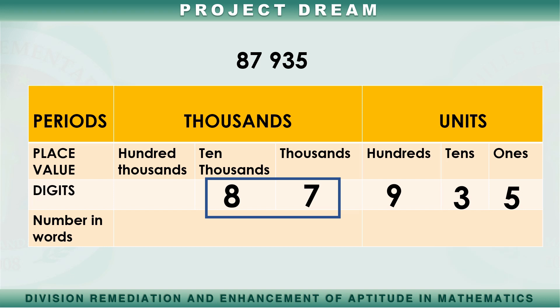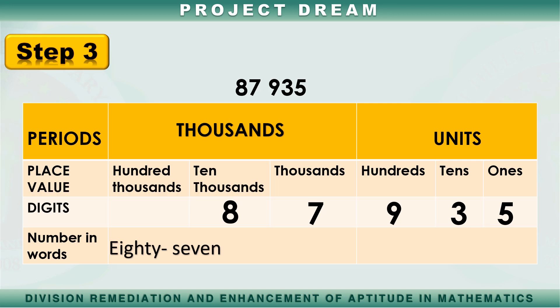We will read it as 87. So now, we can write it here — 87.